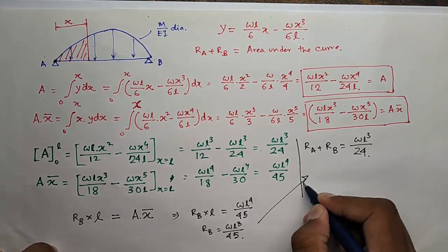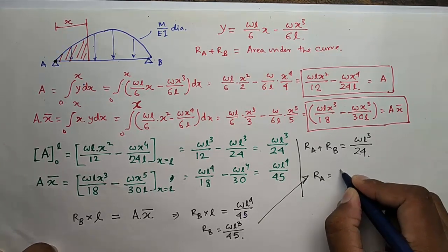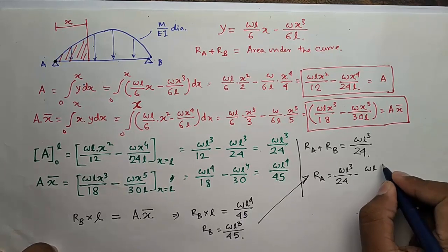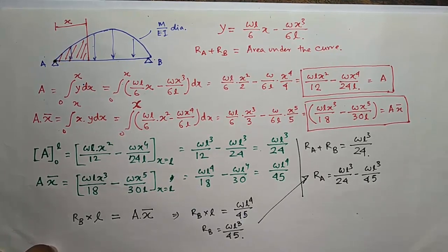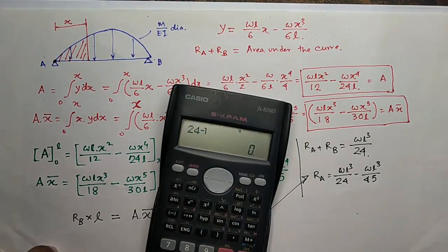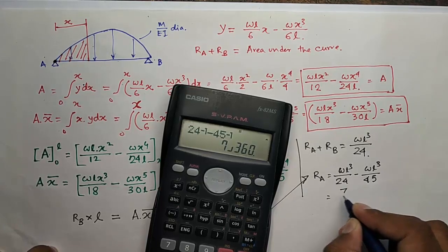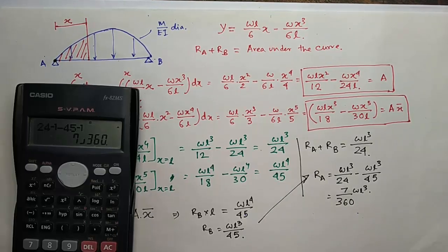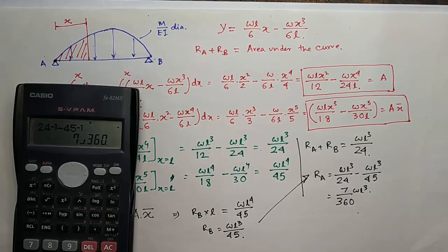From this, RA will be WL cubed by 24EI minus WL cubed by 45EI. So you get 7WL cubed by 360EI.